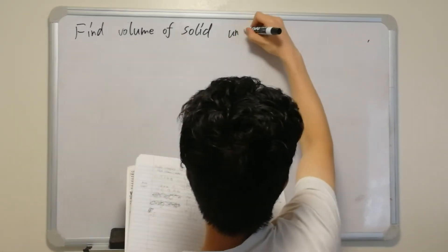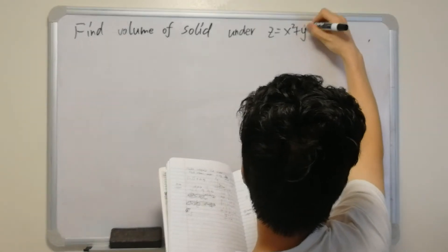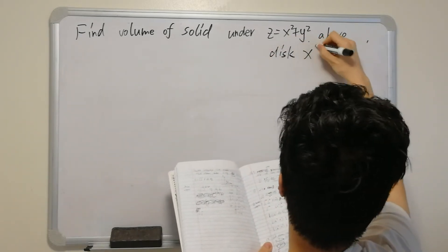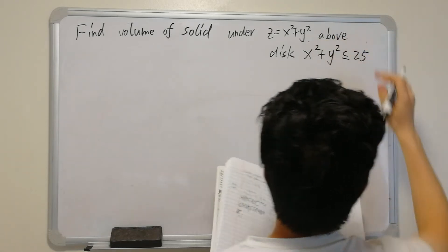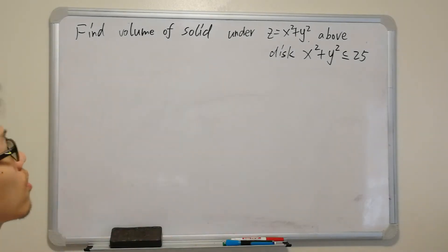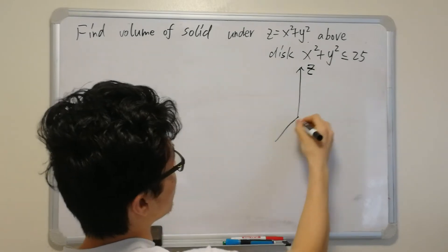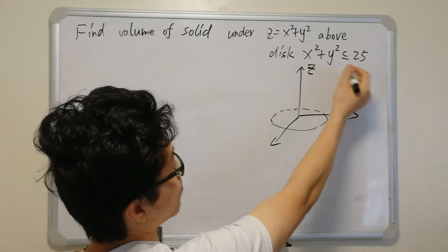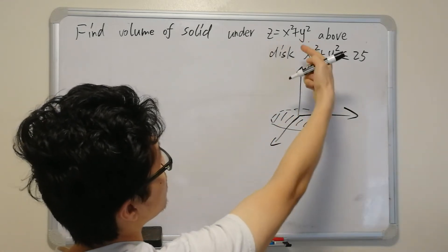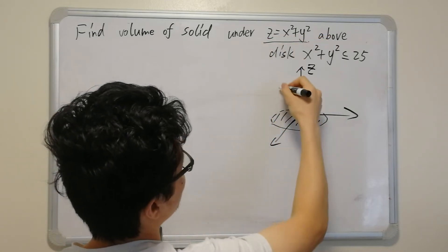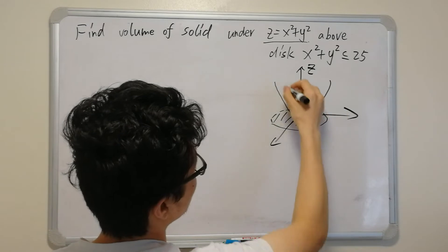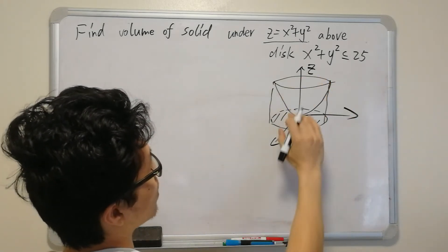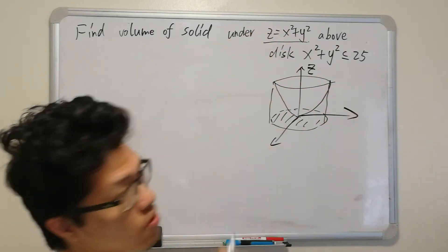The next example: find the volume of the solid under the surface z = x²+y² and above the disk x²+y² ≤ 0.25 on the xy-plane. We sketch the solid: we have the xy-plane with a disk, and the paraboloid surface z = x²+y² above it.